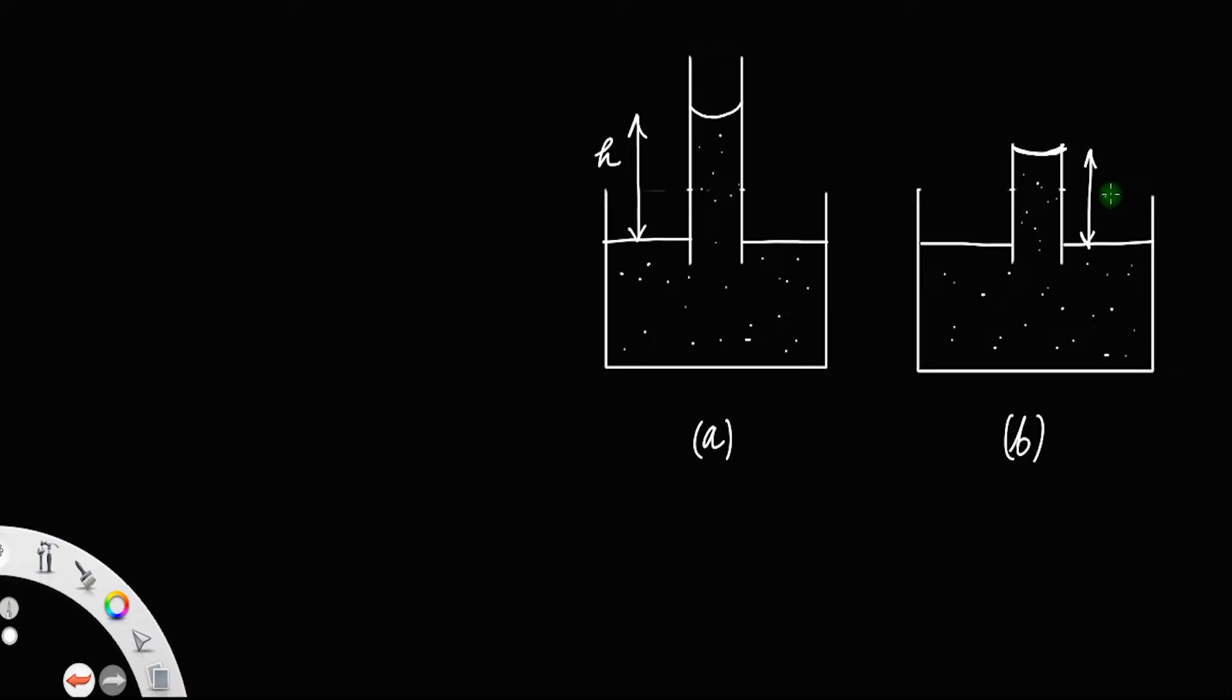So what we want to know is whether the liquid overflows from this tube or the meniscus of the liquid changes.